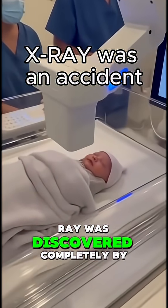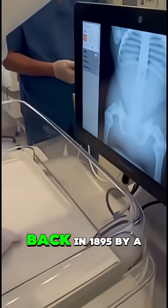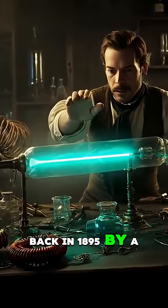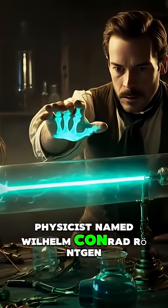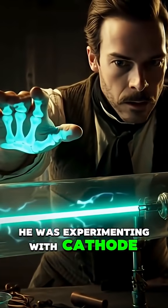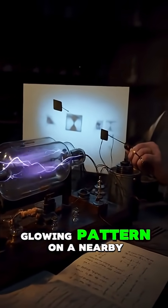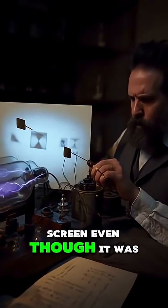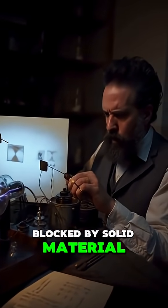Did you know the x-ray was discovered completely by accident back in 1895 by a physicist named Wilhelm Conrad Röntgen? He was experimenting with cathode rays when he noticed a glowing pattern on a nearby screen, even though it was blocked by solid material.